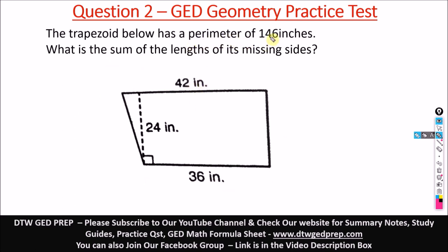So it says the perimeter is 146. P equals the perimeter. Let's give the unknown sides as x1 and x2. So we have the known sides are 42 plus 36, then plus the unknown sides x1 plus x2. And we've been told that P is 146.